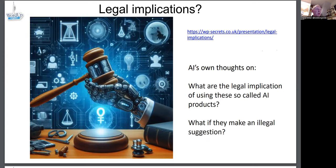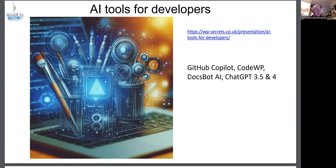Steve Davies asked: what are the legal implications of using AI if it makes an illegal suggestion? I asked that question to AI and it came back with some answers, which you can see on that particular page. If you happen to be a developer, you might want to use GitHub Copilot, Code WP, or Docsbot AI, or just use ChatGPT 3.5 and 4 to answer coding questions. I've done that a few times, and you'll find blog posts about that on the site.